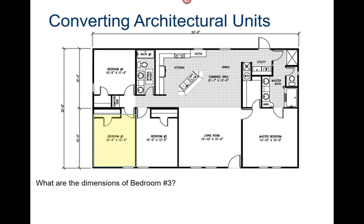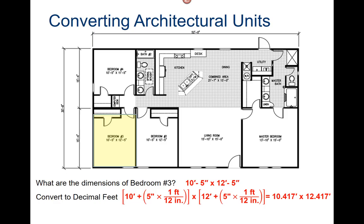Converting architectural units. What are the dimensions of Bedroom 3? Ten feet five inches by twelve feet five inches. Convert that to decimal feet: 10.417 feet times 12.417 feet. Calculate the area of the room: 129.348 square feet. This gives us a very, very accurate measurement.